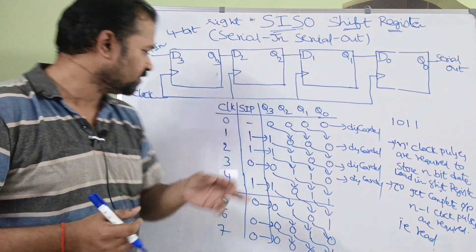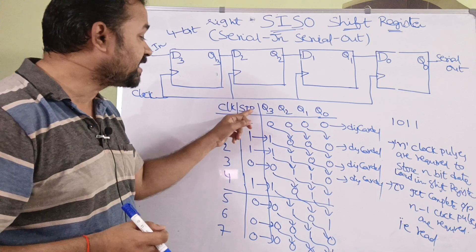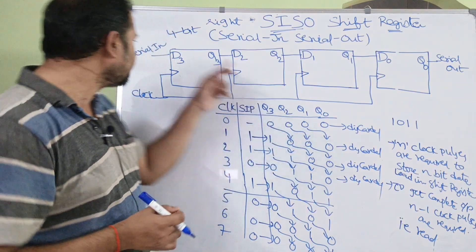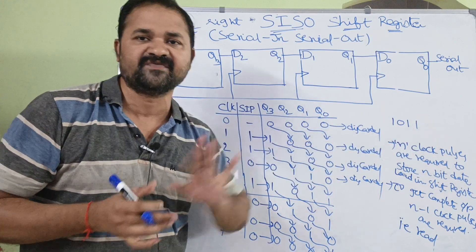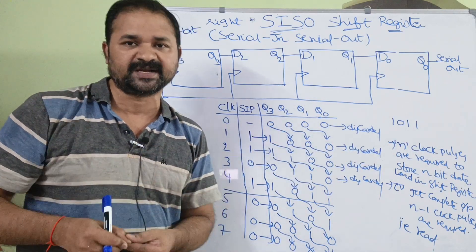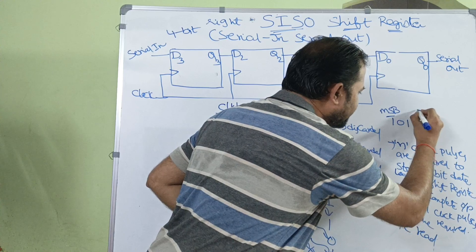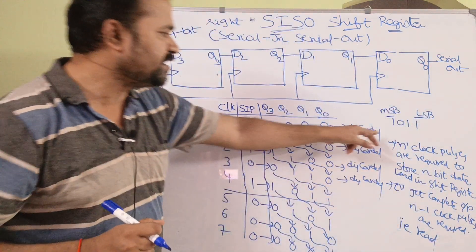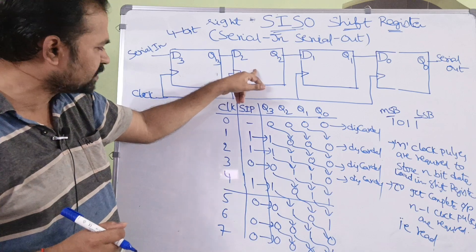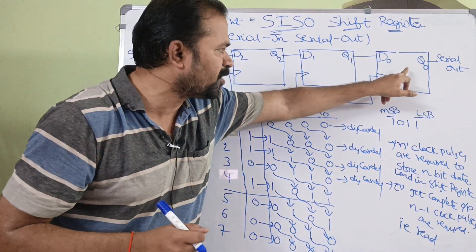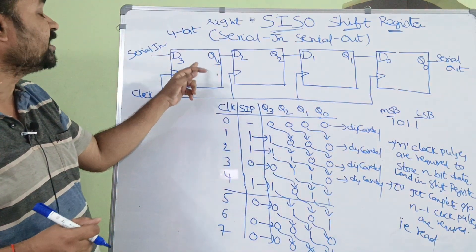Now let's see with the help of an example. We have three columns: the first column represents clock pulse, the second column represents serial input. Assume that our register contains 1011. We want to perform shift-right operation on 1011. This one is the most significant bit and this one is the least significant bit. We want to store the MSB in the first flip-flop and the LSB in the last flip-flop.